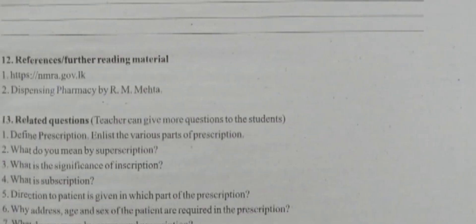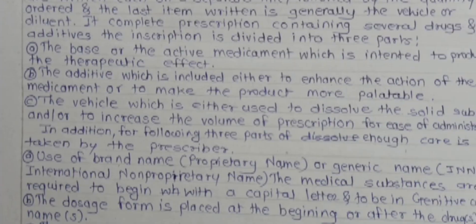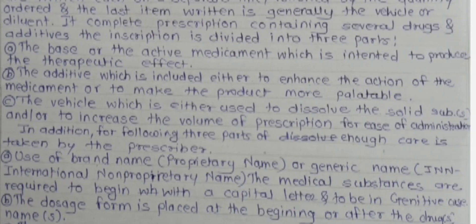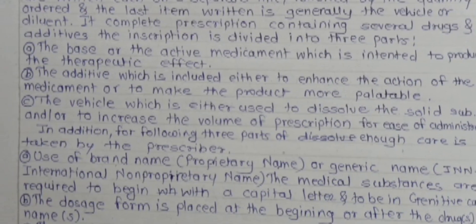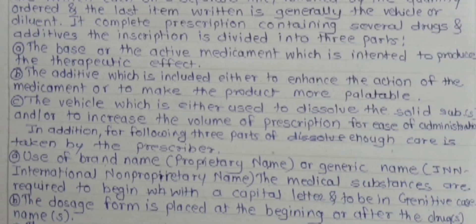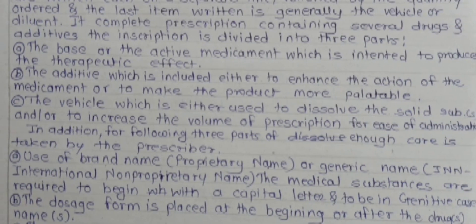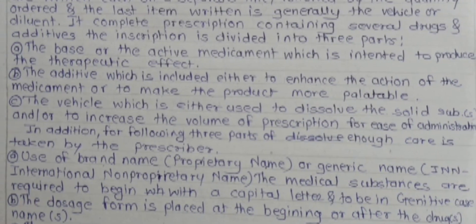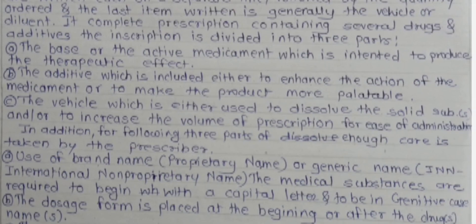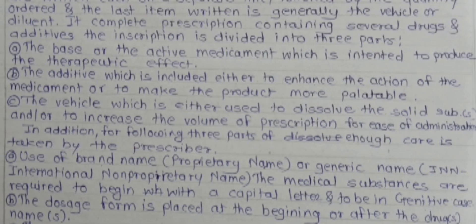Third question: what is the significance of inscription? Inscription is the main part of the prescription; it is the doctor's order. It contains the name of the medicine, the medicinal form — whether tablet, capsule, or syrup — and the quantities, such as 10, 15, or 20 tablets. The name of each medicine is written on a separate line followed by the quantity. The last item written is generally a vehicle or diluent — for example, a syrup or solution.